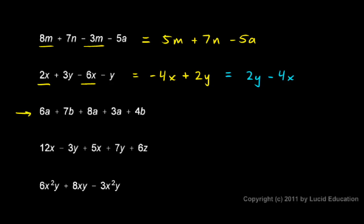Now this one, 6a plus 7b plus 8a plus 3a plus 4b. Well look at this, 3a terms, 6a, 8a, and 3a, those can all be combined into a single term. 6 and 8 is 14, so that's 14a plus the 3a. That gives me 17a. I've just taken all of those a terms that are underlined there, and I've combined them. 17a.